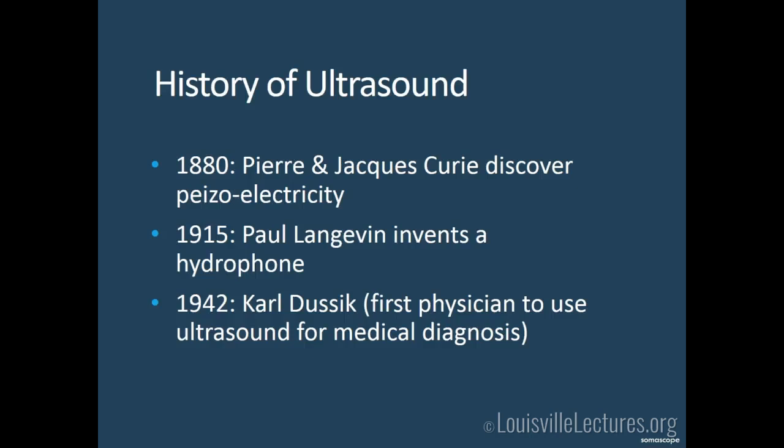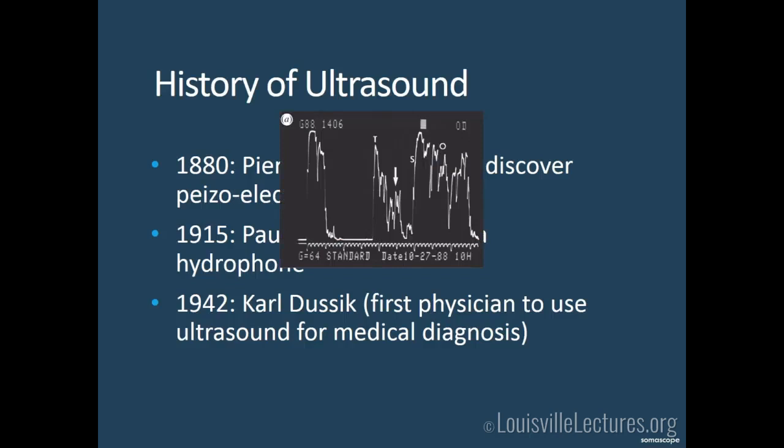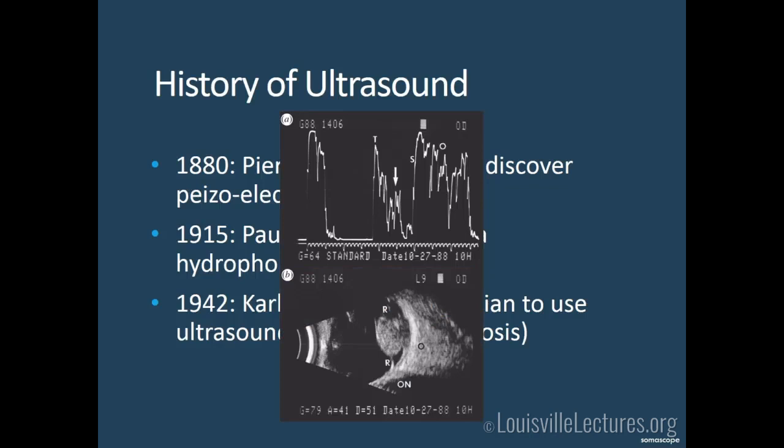In 1942, Dr. Dusik, a neurologist from Vienna, started using ultrasound to diagnose brain tumors. But this was A mode — amplitude mode — not the ultrasound we use today. If you try to make sense of an A mode image, it's very hard to use for diagnostic purposes. That changed significantly with the advent of B mode, which is what we use most commonly now.